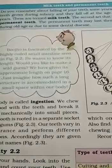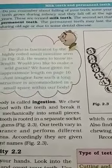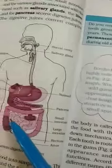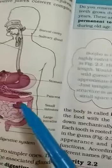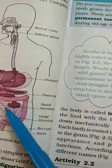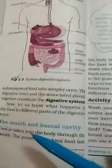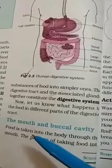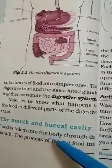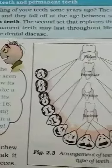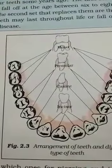In the previous lecture I explained the digestive system. In humans, the first part is the mouth and buccal cavity. In the buccal cavity, what is present?